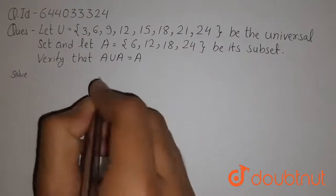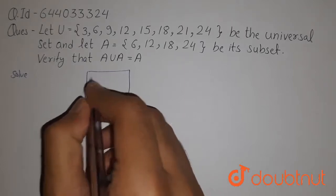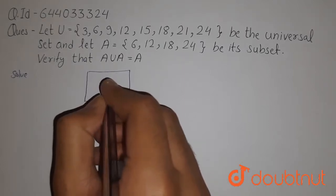Then we have to verify that A union A will be equals to A. So, suppose that this is a set and it is a universal set,